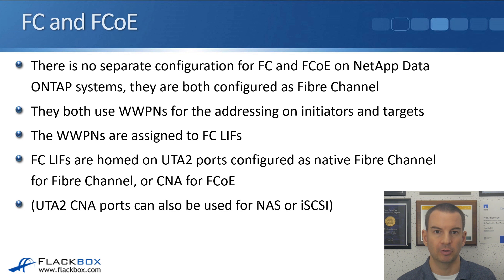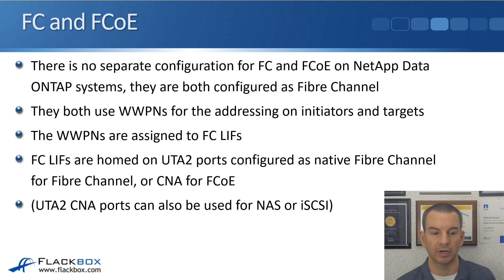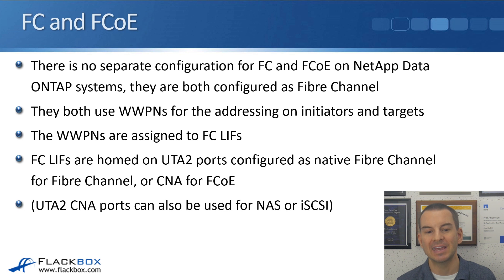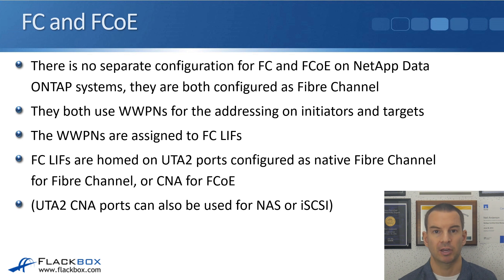They're both using WWPNs for addressing. The WWPNs are assigned to Fibre Channel logical interfaces, just like IP addresses are assigned to logical interfaces for NAS and iSCSI. Fibre Channel LIFs are homed on UTA2 ports configured as either native Fibre Channel or CNA — converged network adapter — for FCoE. If you configure a UTA port as CNA, it can also be used for NAS or iSCSI, because when configured as CNA it becomes an Ethernet port that supports FCoE, iSCSI, and NAS protocols.